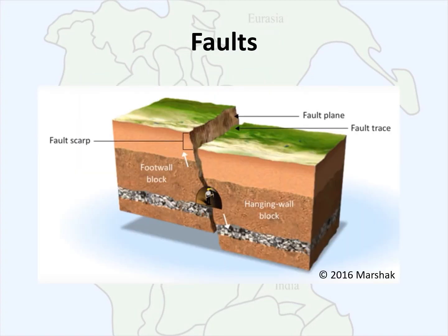A fault is a fracture of the earth's crust. These fractures occur due to strain when the crust is brittle, usually at low temperatures and pressures. Several terms are illustrated in this diagram: the fault plane, which is a geometric plane that a fault line follows; and the hanging wall and foot wall, which are sections of rocks or formations or tectonic blocks that move with respect to that fault plane.